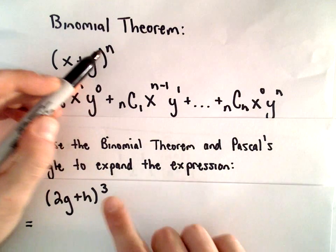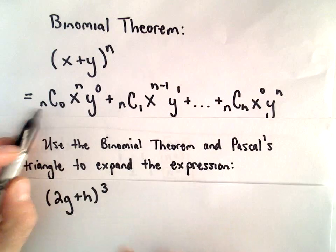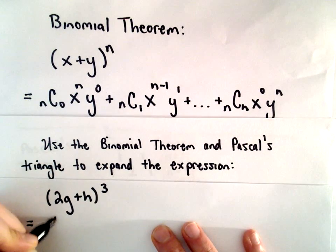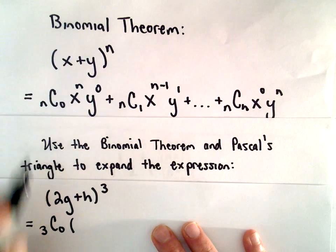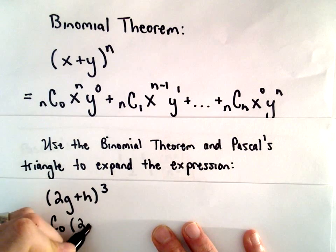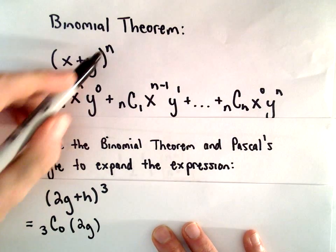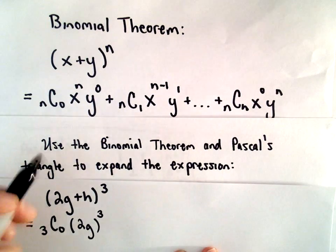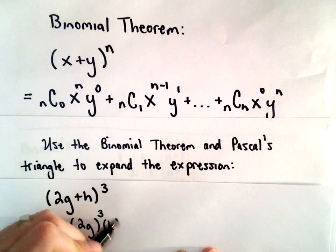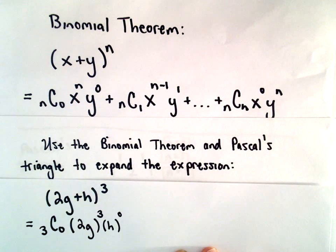Notice in this case our exponent of n is 3. So we'll start off with 3 choose 0. Then we take whatever the first term is, in this case that's 2g, and we raise it to the exact same power. So we'll raise that to the third power. And then we take our other term, which in this case is h, and we raise that to the zero power.